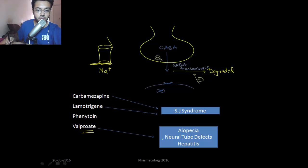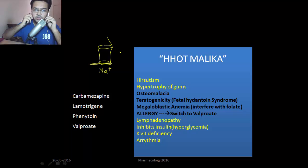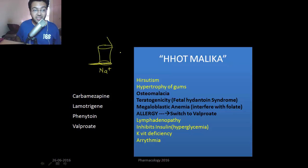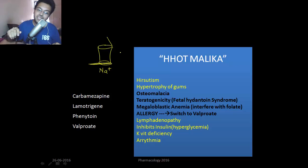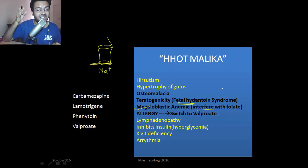Here are 10 reasons to avoid phenytoin in young ladies. If you give phenytoin to a patient like Malika, she'll present with hirsutism, gum hypertrophy, weak bones, allergy, lymphadenopathy, cardiac arrhythmia, and if she gets pregnant, her child will suffer from fetal hydantoin syndrome. She'll also have anemia because phenytoin interferes with folate metabolism. Phenobarbitone and primidone, which are barbiturates, also interfere with folate metabolism.